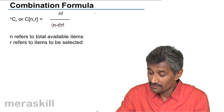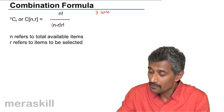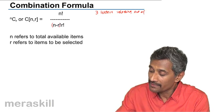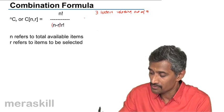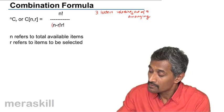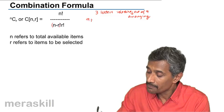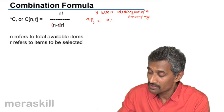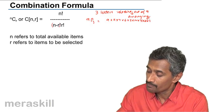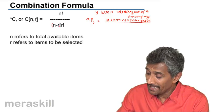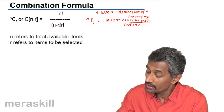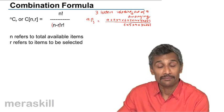Let's take the example of selecting three letters out of nine letters and arranging them. The number of ways is 9P3, which is 9 factorial — that is 9×8×7×6×5×4×3×2×1 — divided by (9 minus 3) factorial, which is 6 factorial, that is 6×5×4×3×2×1.